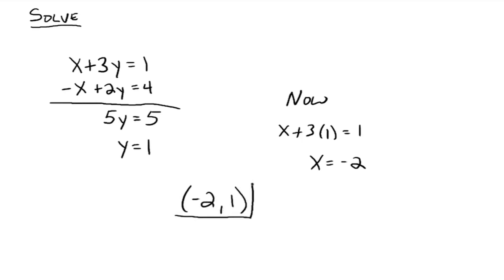So this would be the ordered pair, negative 2, 1. If you were to take both these equations and graph them, they would intersect at negative 2 comma 1. If you were to take these equations and solve it using the substitution method, you would still get negative 2 comma 1, and now with this new method called the elimination method. All three methods, you should still get the same solution.